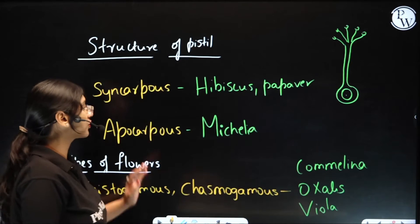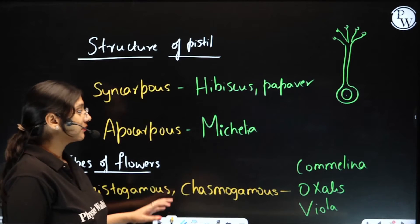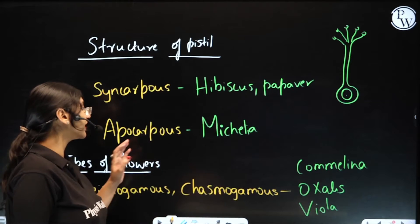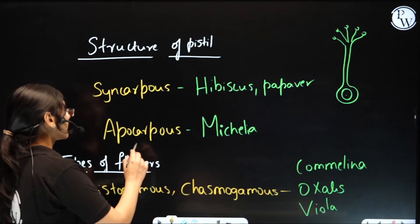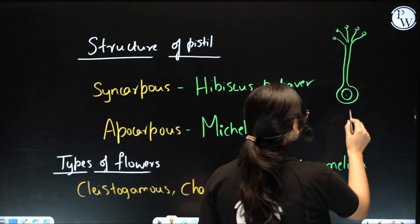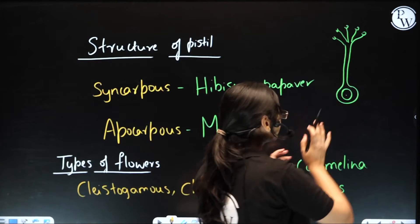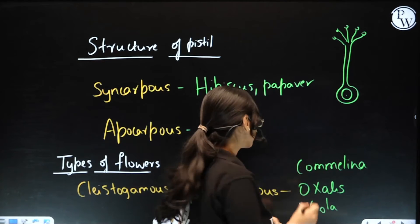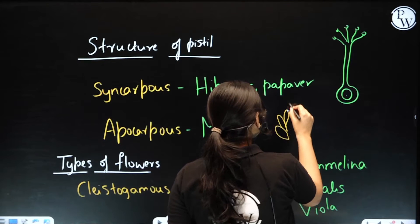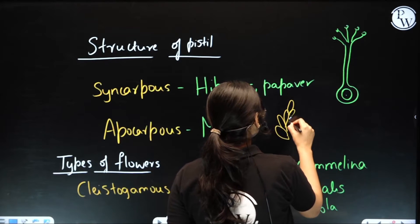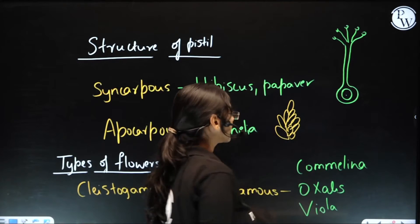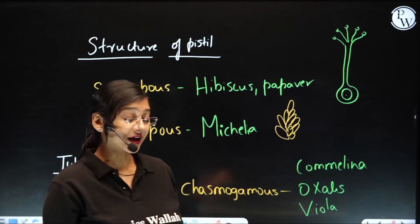Now coming to apocarpous — Michelia is the example, that is champak. Over here we are able to see the carpels are free from the base itself. Something like this — the diagram we get to see in your NCERT. So these are all individual carpels being free.